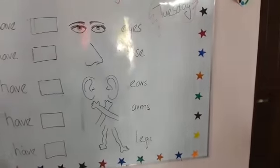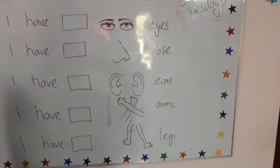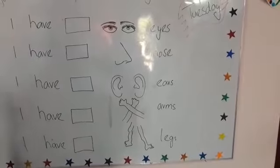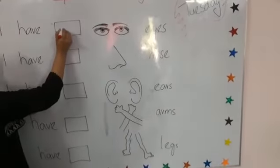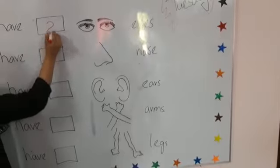So you have to count your body parts and write how many parts you have. So first of all we have eyes. Count your eyes and see how many eyes you have. So we all have two eyes. We will write two here.